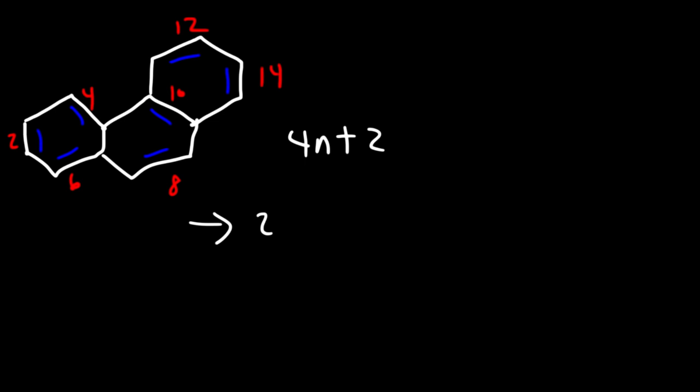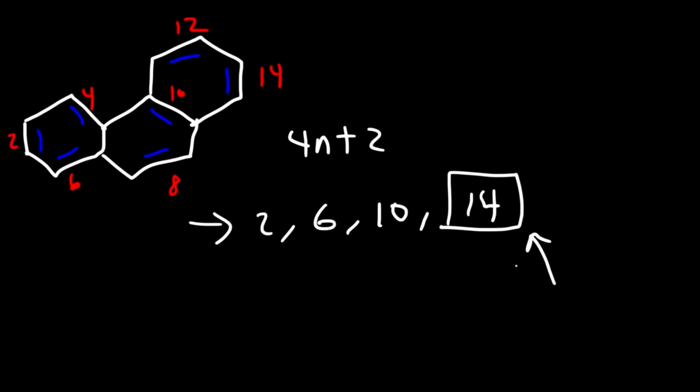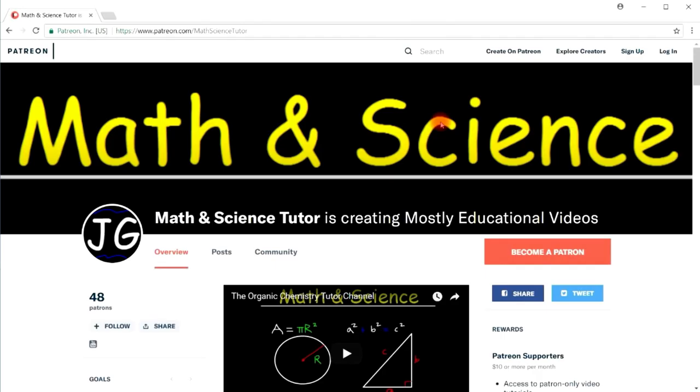The next molecule is called phenanthrene. Is it aromatic, anti-aromatic, or non-aromatic? It is cyclic, conjugated, and planar — it has all of those characteristics. So all we need to do is count the pi electrons: 2, 4, 6, 8, 10, 12, 14. Let's check Hückel's rule — starting at 2 and adding 4 each time gives 2, 6, 10, 14. These are the aromatic numbers. Since we have 14 pi electrons and all other conditions are met, phenanthrene is an aromatic compound.